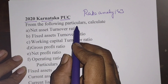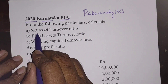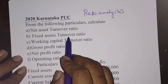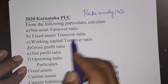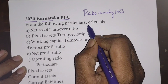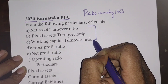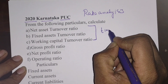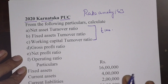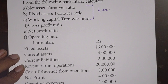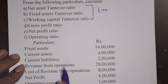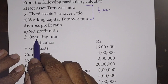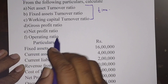From the following particulars, calculate net asset turnover ratio, fixed asset turnover ratio, and working capital turnover ratio. These three are turnover ratios and their answer will end with times. The next ones are gross profit ratio, net profit ratio, and operating ratio.